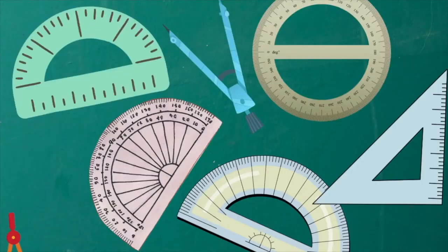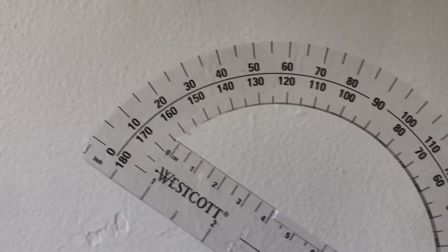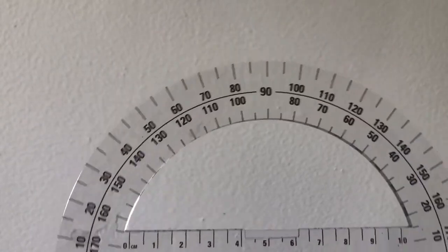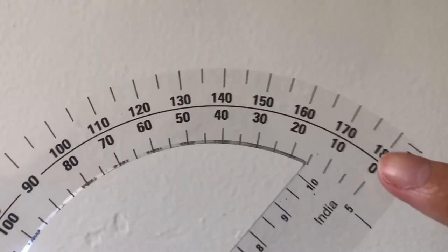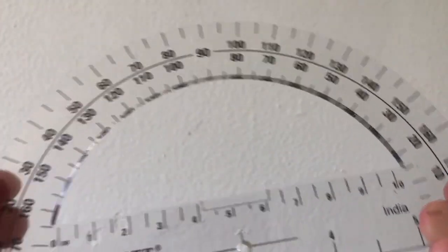There are different types, but the most popular ones are the semicircle and circular protractors. They often have two sets of numbers going into opposite directions, 0 to 180 degrees and 180 degrees to 0 degrees.